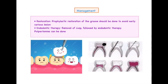Moving on towards management: the first treatment involves prophylactic and preventive measures. There is a deep developmental groove present, which can serve as a niche for bacteria to proliferate and cause caries. Therefore, we need a prophylactic restoration of the deep developmental groove to avoid caries incidence. If caries has already initiated and destroyed tooth structure, we would then undertake endodontic therapy.